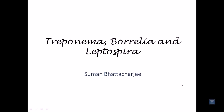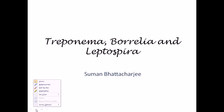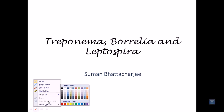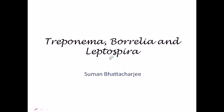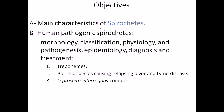We are going to talk about the type of bacteria called spirochetes. Among spirochetes, we are going to talk about three types: Treponema, Borrelia, and Leptospira. Among all these different types of bacteria, they have some general characteristics in common and also features that differ from each other. We are going to talk about their physical properties, biochemical features inside their cells, and the pathogenesis or diseases they cause for humans.